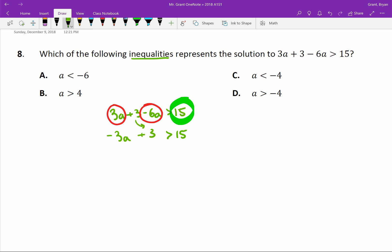From here we're just trying to isolate a, and our first step is we want to undo any addition and subtraction, so I'm going to subtract 3 from both sides. We end up with negative 3a is greater than 12.